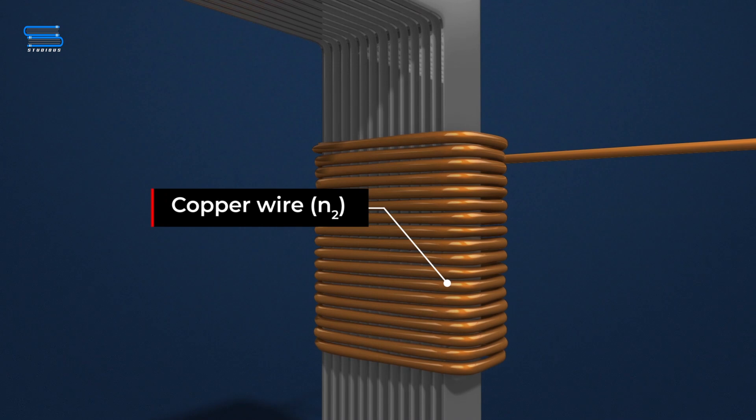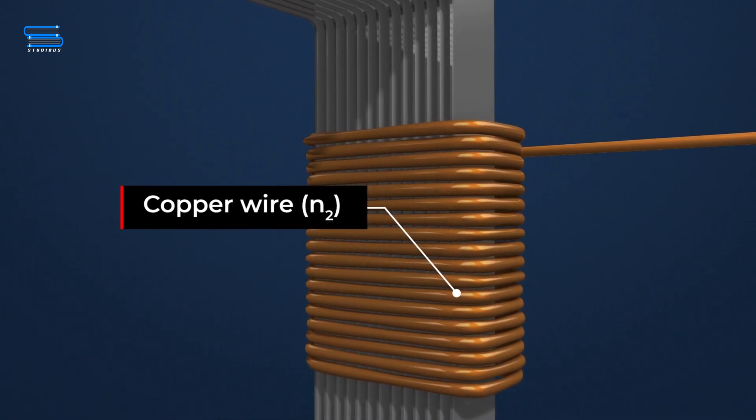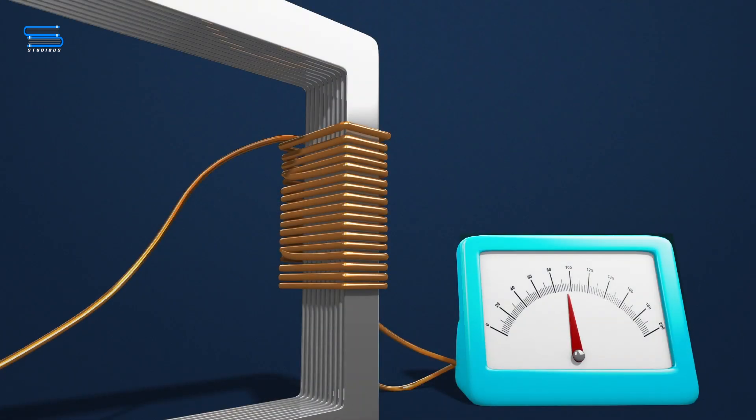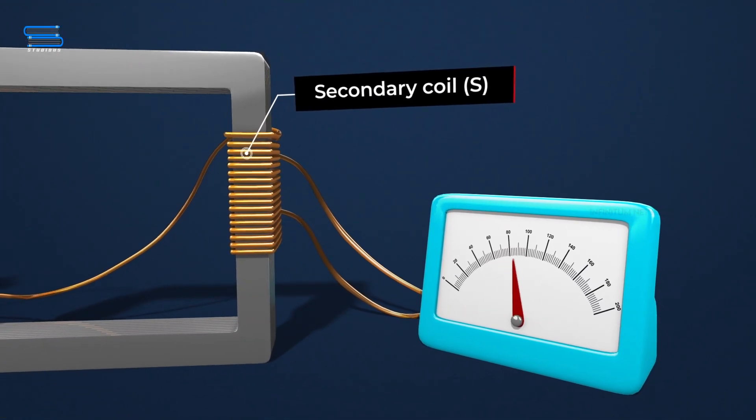On the opposite side of the rectangular core, another copper wire is wound to make a coil of turns N2. If output voltage is delivered from this coil, it is called a secondary coil, S.